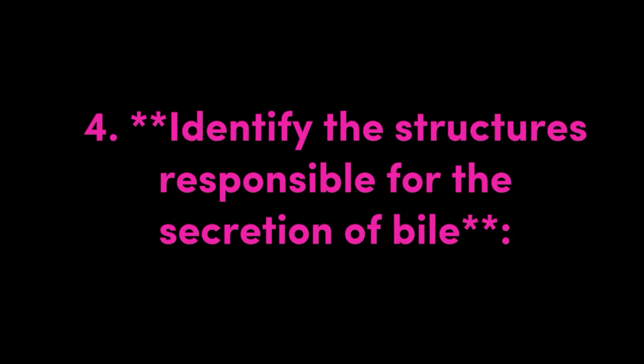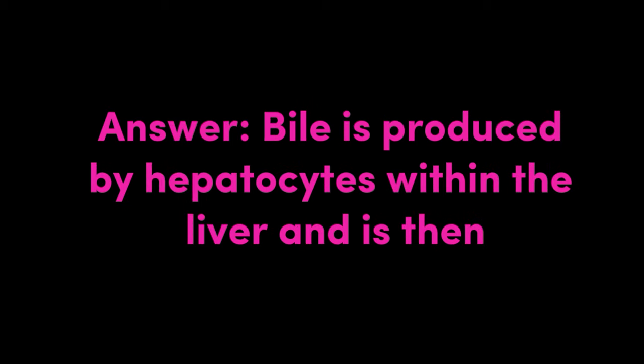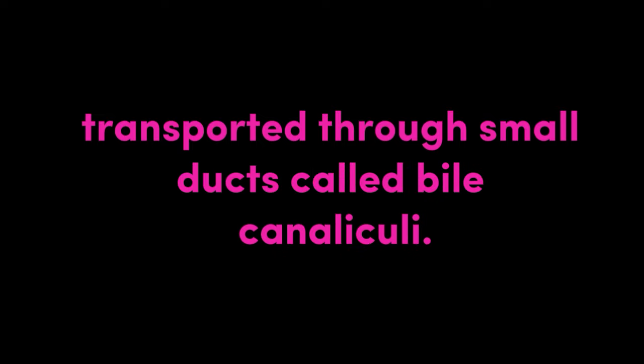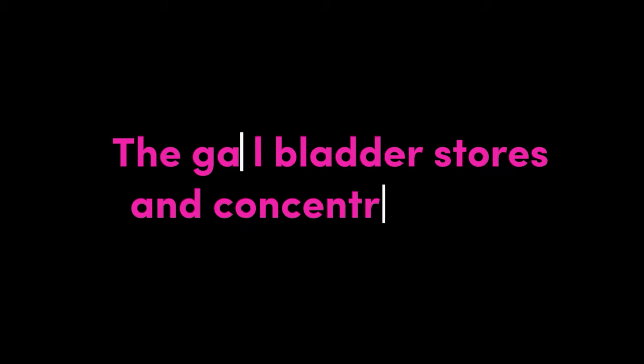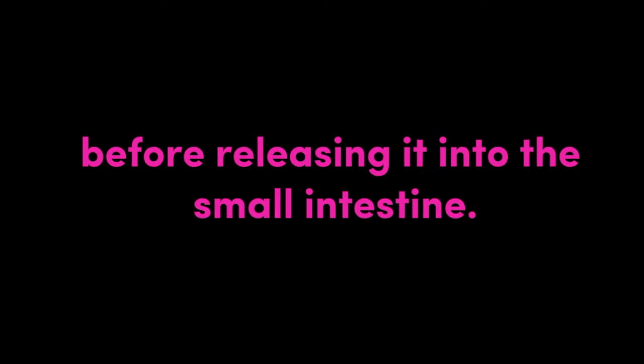Question 4: Identify the structures responsible for the secretion of bile. Answer: Bile is produced by hepatocytes within the liver and is then transported through small ducts called bile canaliculi. These canaliculi merge to form bile ducts, which eventually join the common bile duct. The gallbladder stores and concentrates bile before releasing it into the small intestine.